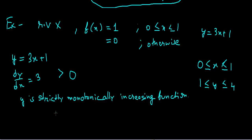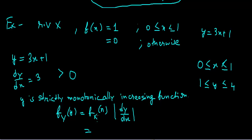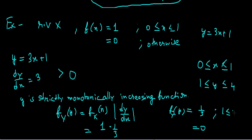Now simply put into the formula: f of y equals f of x times the modulus of dx/dy. The value of f of x was 1, and the modulus of dx/dy equals 1/3. Multiplying these, the final answer is: f of y equals 1/3 for y in [1, 4], and 0 otherwise.